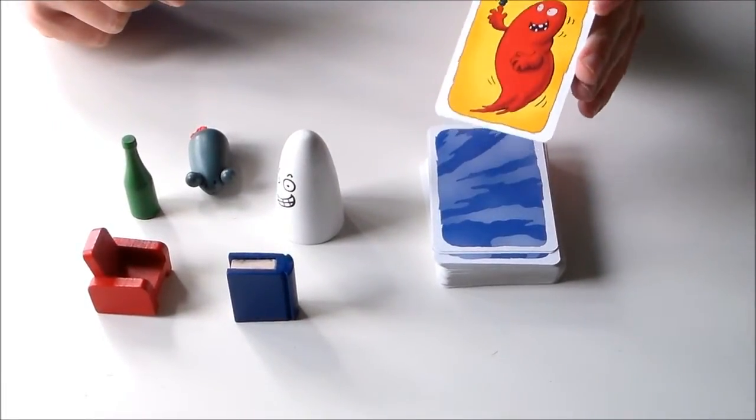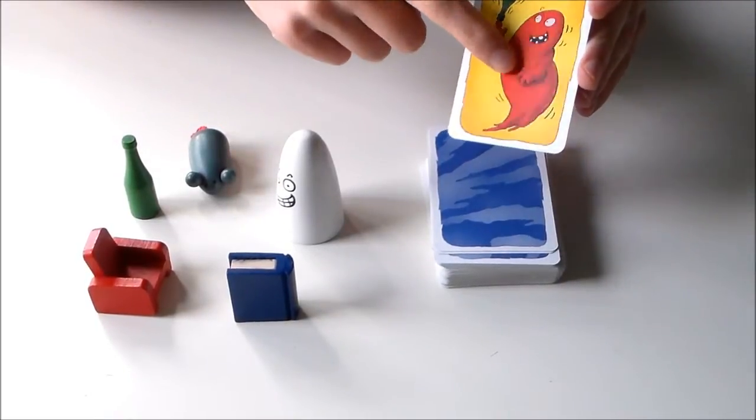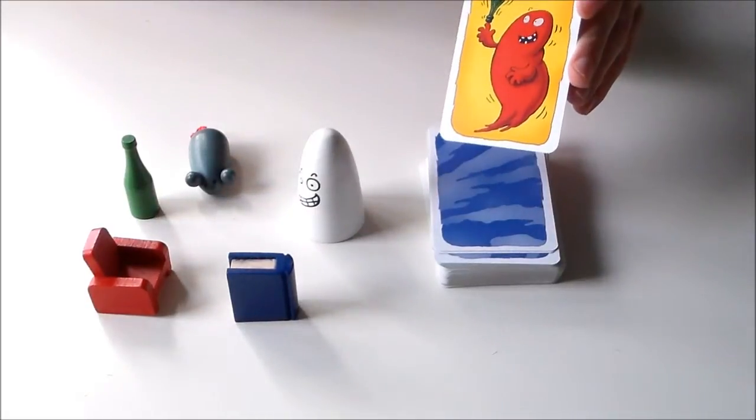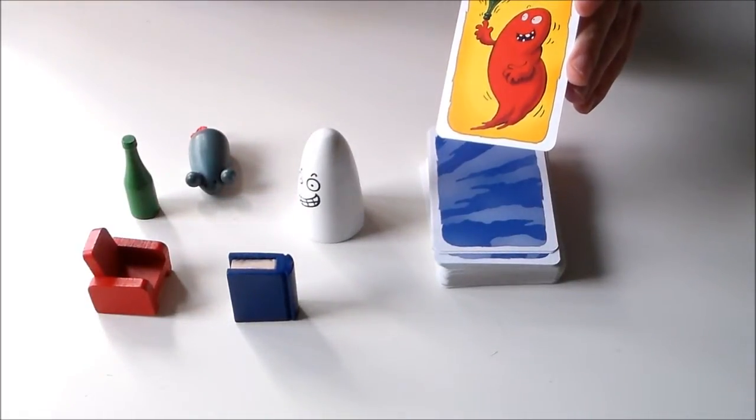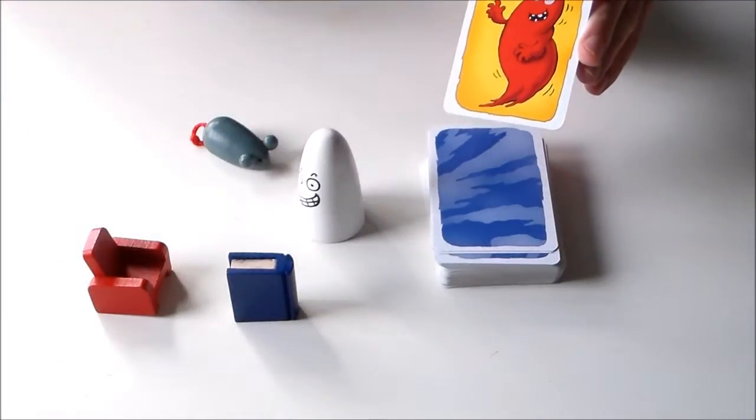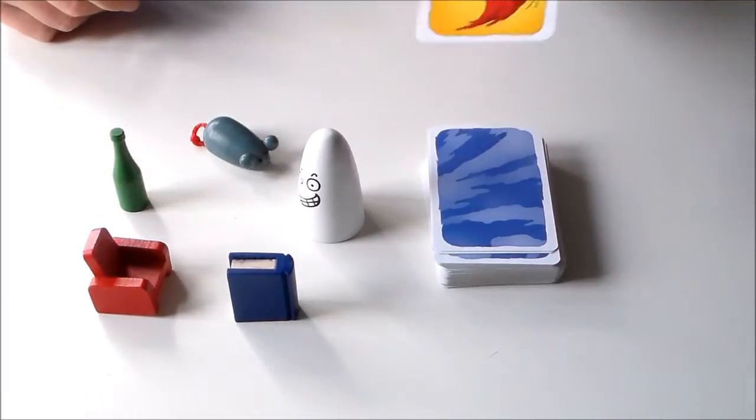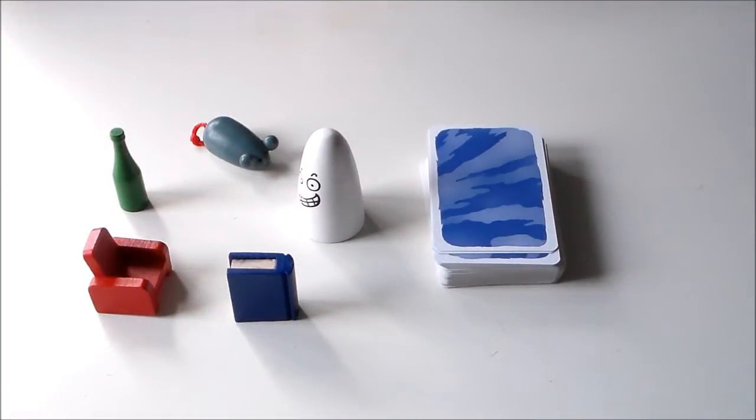If there is something correct you have to grab that object. So the Ghost is red which is wrong because it's white. But there's a green bottle. This is right. And correct. So everybody now has to grab the green bottle as fast as they can. The player who does so first gets this card. This means he has 1 point.